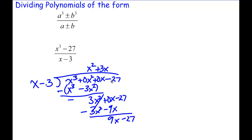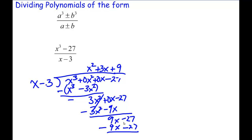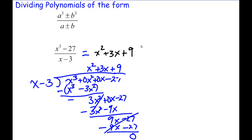Finally, you ask how many times does x go into 9x — that is positive 9 times. So 9 times x is 9x, then negative 27, and of course subtract. These cancel out and you're left with no remainder — a zero remainder. So this actually divides to equal the quotient, which is x squared plus 3x plus 9. If you do these correctly, there should be no remainder for this style of perfect cube question.